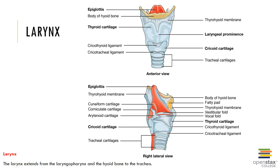The epiglottis is the only piece formed of elastic cartilage, forming a flexible flap that covers the glottis during swallowing so that food cannot enter the respiratory passageways. The thyroid cartilage is a large single piece of hyaline cartilage forming the anterior and lateral walls of the larynx; its prominent anterior surface is more commonly called the Adam's apple, known as the laryngeal prominence. The cricoid cartilage is a single piece of hyaline cartilage with a greatly expanded posterior portion to provide support; together, the cricoid and thyroid cartilage protect the glottis and entrance to the trachea.